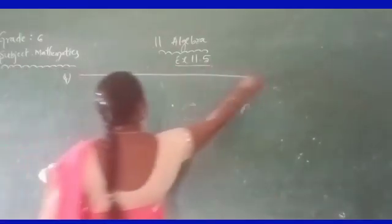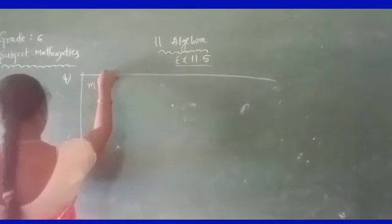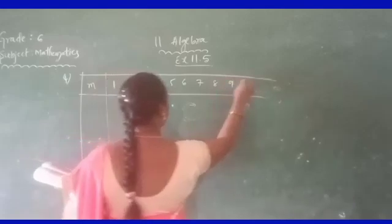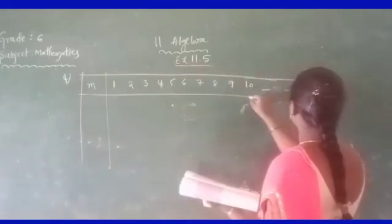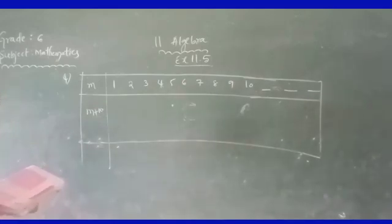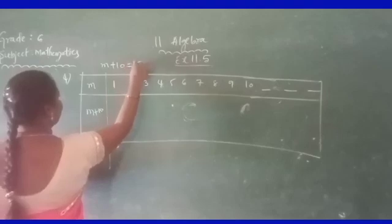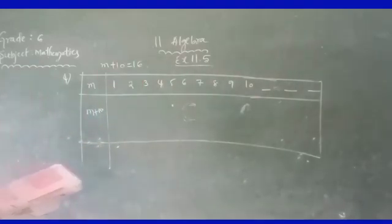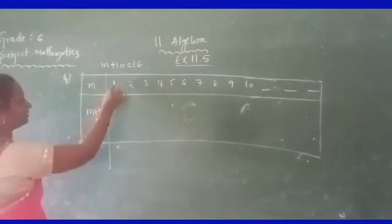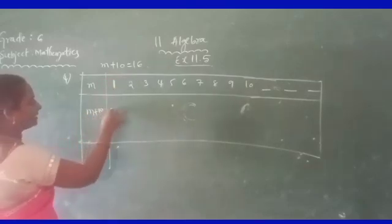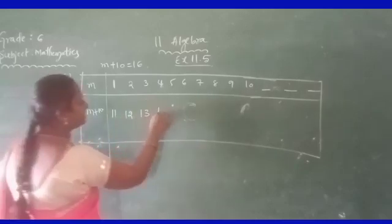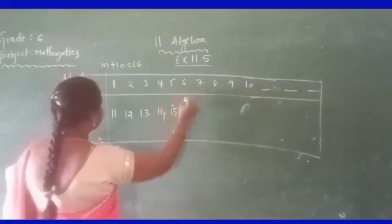A table is given with variable M taking values 1 through 10 and beyond. The expression is M plus 10. Completing the table: 1 plus 10 is 11; 2 plus 10 is 12; 3 plus 10 is 13; 4 plus 10 is 14; 5 plus 10 is 15; 6 plus 10 is 16; 7 plus 10 is 17; 8 plus 10 is 18.